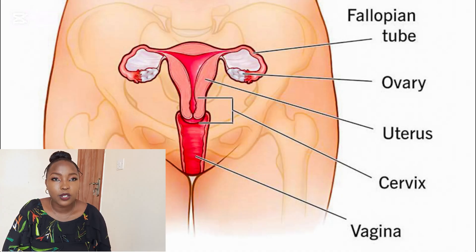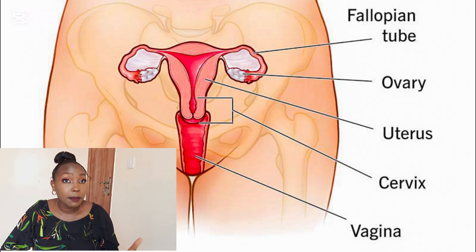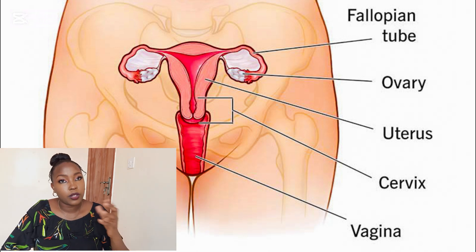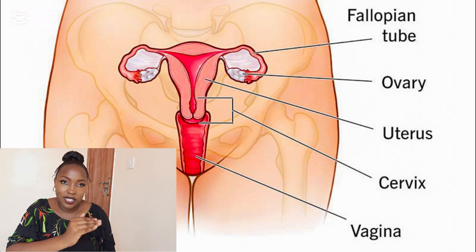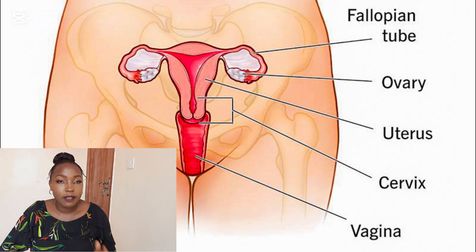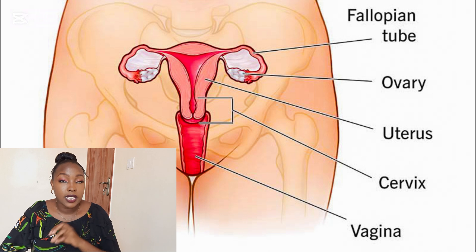Next, we have the fallopian tubes or oviducts. These are a pair of thin tubes that connect the ovaries to the uterus. Their main purpose is to allow the passage of the ova from the ovaries to the uterus. The fallopian tube also provides the site for fertilization — when a sperm makes its way into the uterus and reaches the fallopian tube, this is where fertilization takes place, and the fertilized egg or zygote is then transported for implantation in the uterus.